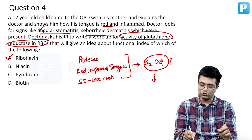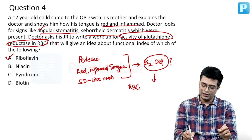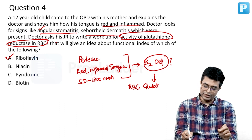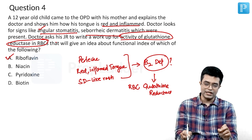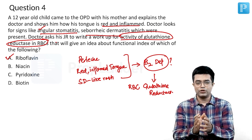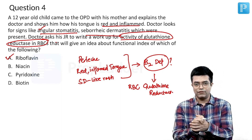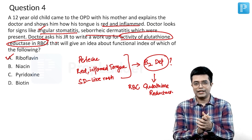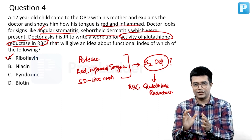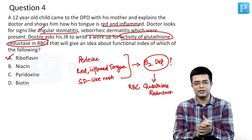For that, we always go for the RBC glutathione reductase assay. You should know that B2 is a component of flavin mononucleotide (FMN) and flavin adenine dinucleotide (FAD).